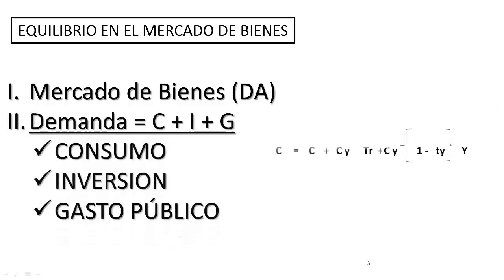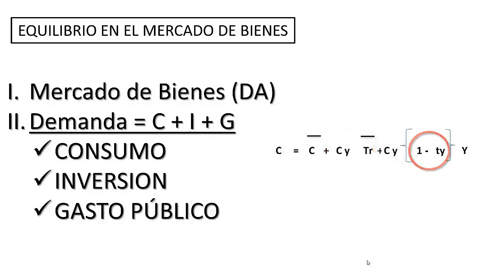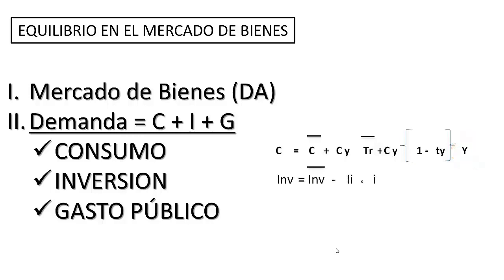Como ya vimos, el consumo es función de la renta disponible y está conformado por un consumo autónomo. Las transferencias que se reciben dependen positivamente de la propensión marginal a consumir, negativamente de los impuestos y positivamente de la renta, mientras que la inversión de las empresas posee también un componente autónomo y depende negativamente del tipo de interés.